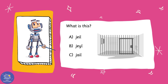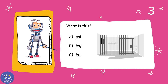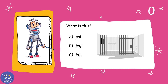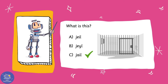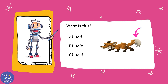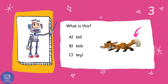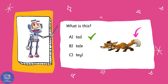What is this? What's the correct spelling of jail? It's a jail — is it A, B, or C? Five, four, three, two, one. Well done! It's C — jail is spelled J-A-I-L. Well done! And tail is spelled T-A-I-L. Fantastic, you got it right!